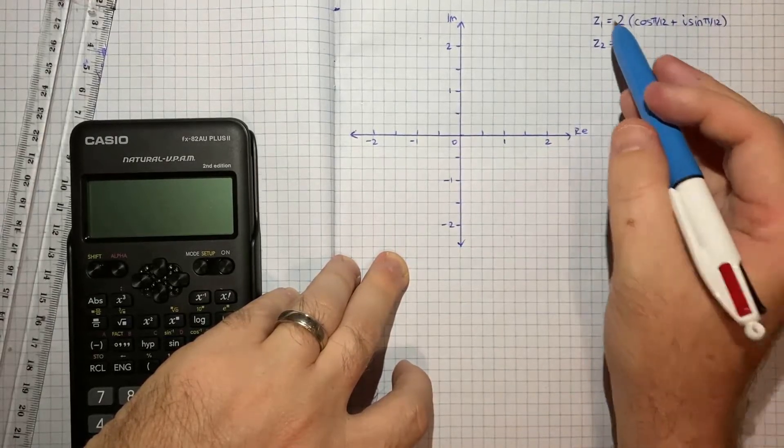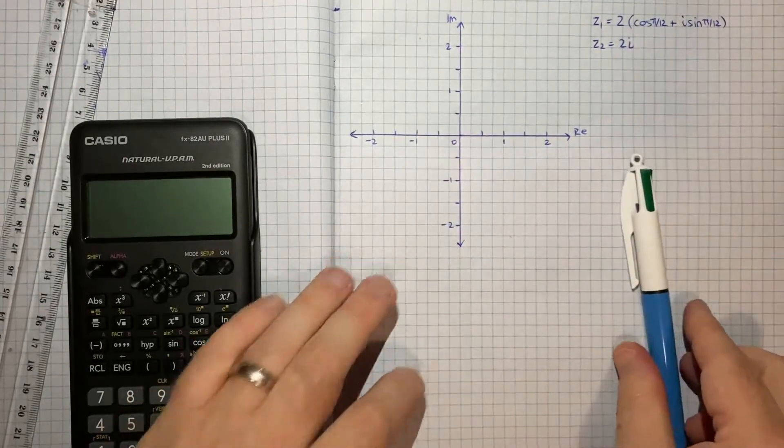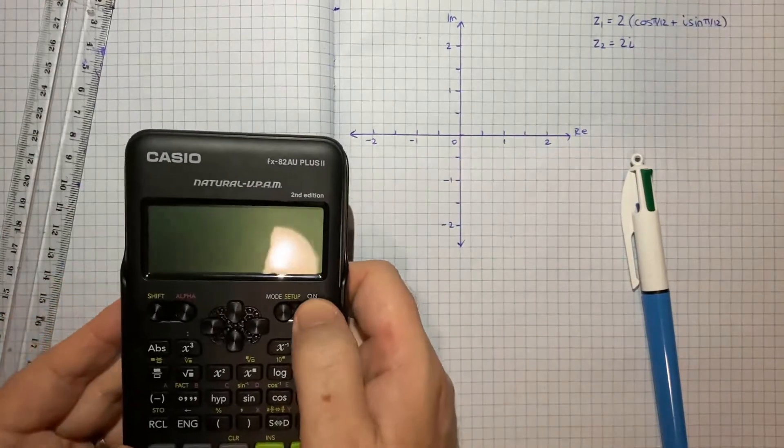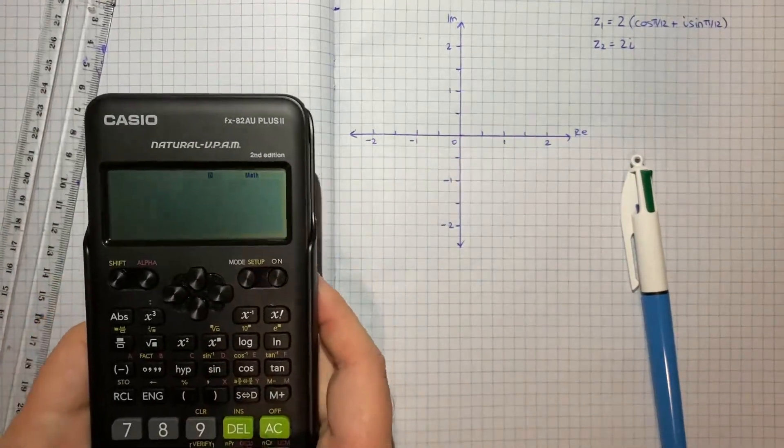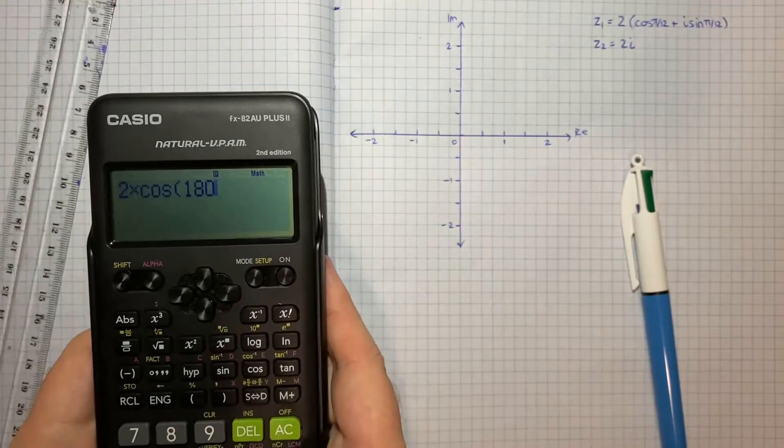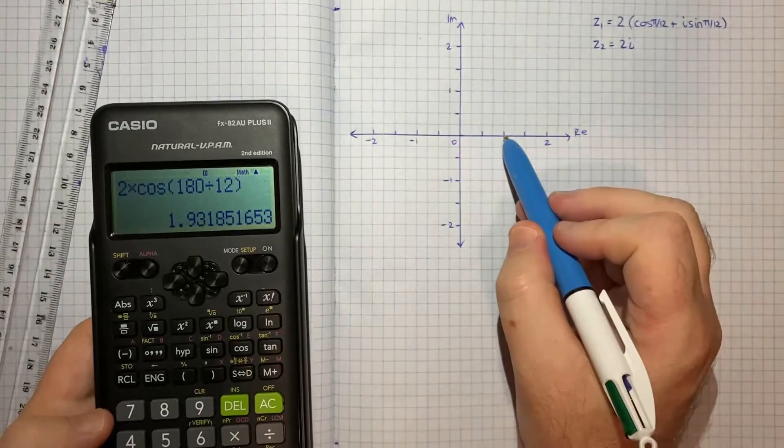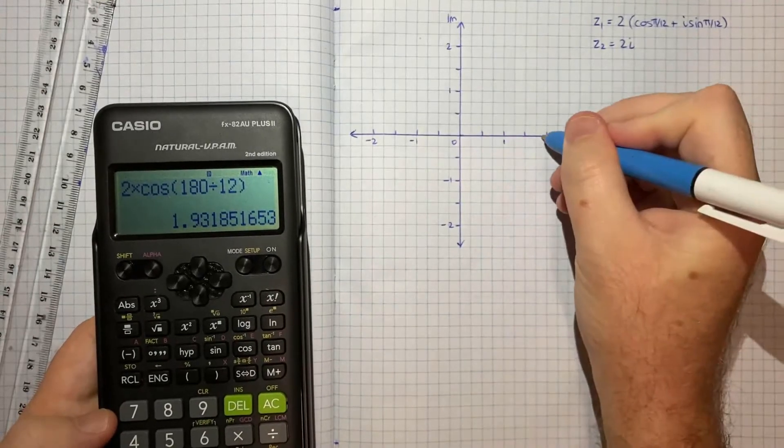So for z1, we need to know the real and imaginary components. So I might just plug these into the calculator so I can plot them accurately. So we'll have 2 times cos 180 divided by 12. So that's about 1.9, so about here.